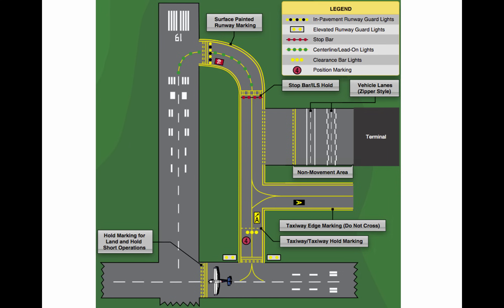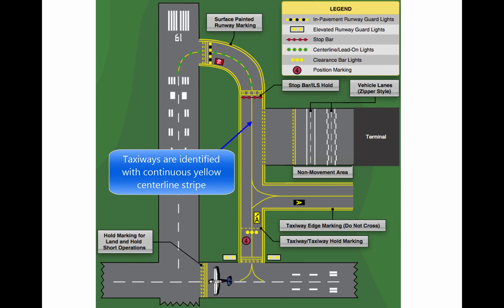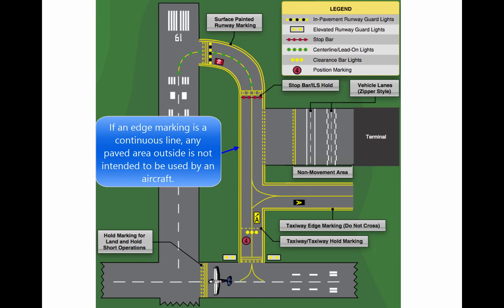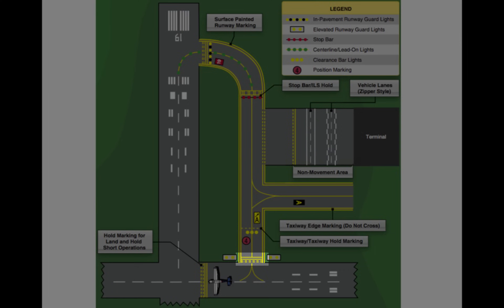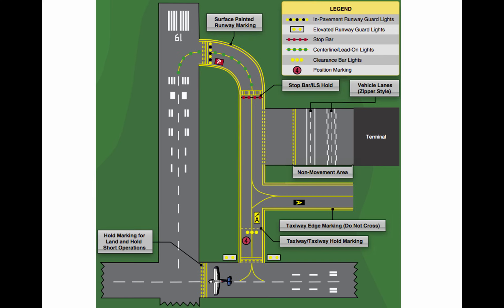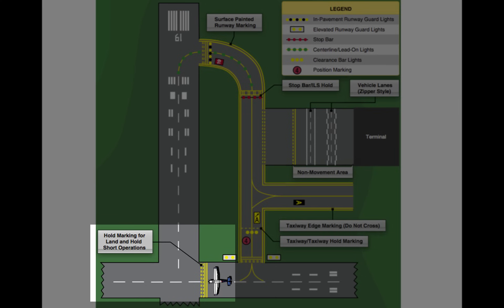Aircraft use taxiways to transition from parking areas to the runway. Taxiways are identified by a continuous yellow centerline stripe and may include edge markings to define the edge of the taxiway. This is usually done when the taxiway edge does not correspond with the edge of the pavement. If an edge marking is a continuous line, the paved shoulder is not intended to be used by an aircraft. If it is a dashed marking, an aircraft may use that portion of the pavement. Where a taxiway approaches a runway, there may be a holding position marker, consisting of four yellow lines, two solid and two dashed. The solid lines are where the aircraft is to hold. At some towered airports, holding position markings may be found on a runway, used when there are intersecting runways and ATC issues instructions such as cleared to land, hold short of runway 30.